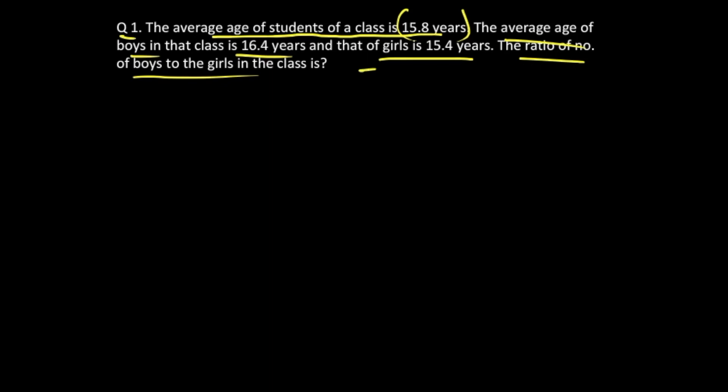So this becomes our type one sort of question in which the ratio is unknown to us. We'll follow our same method, that is the allegation method, and we'll try to find out what is the ratio.